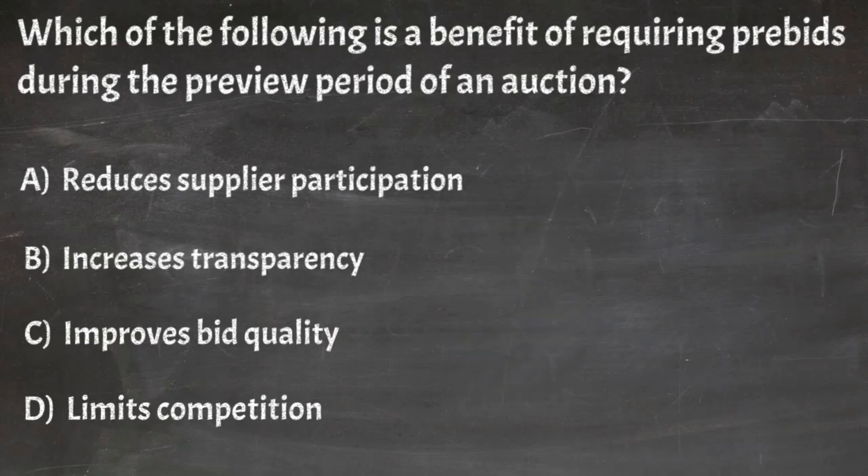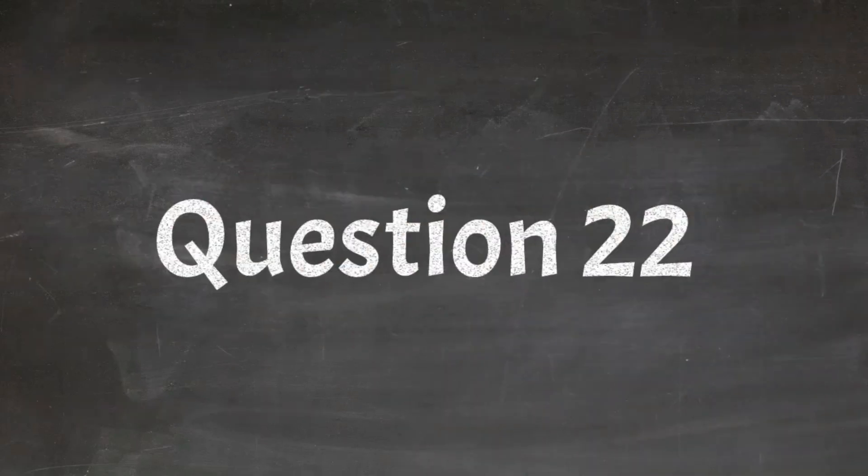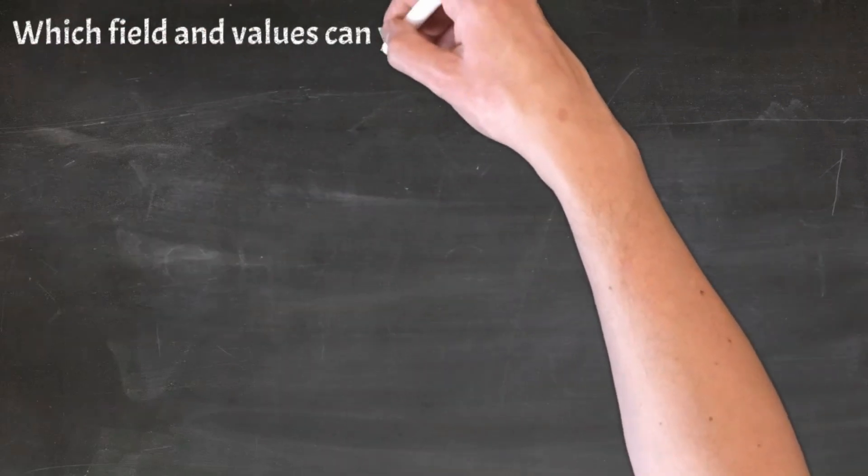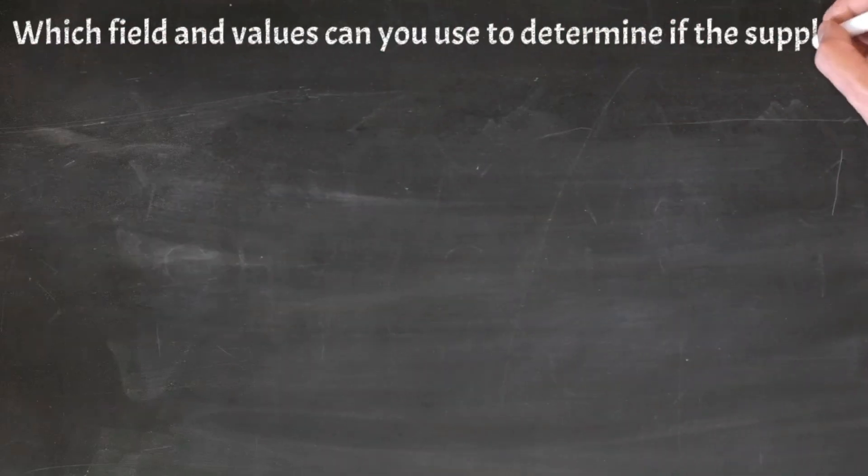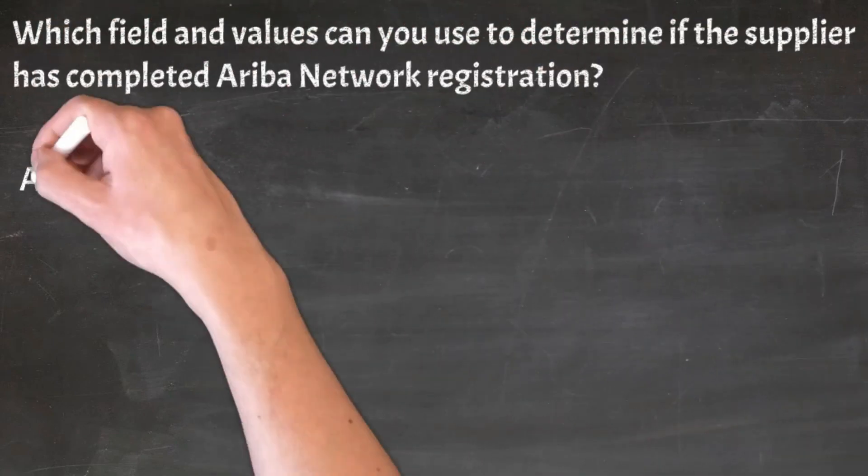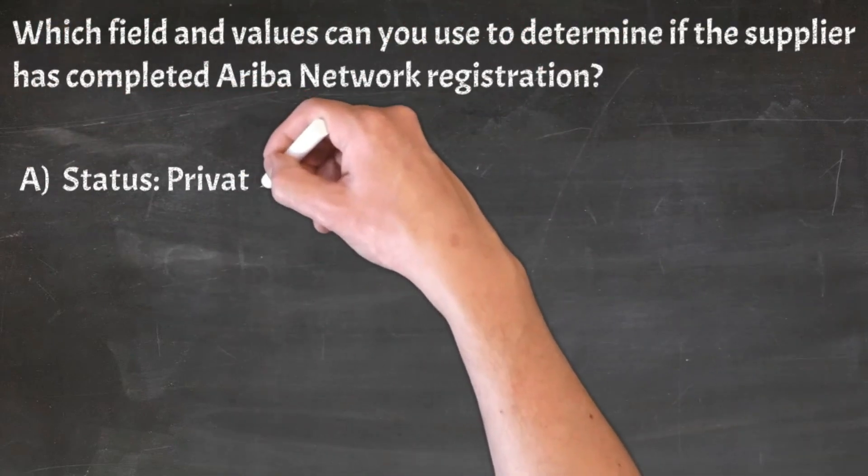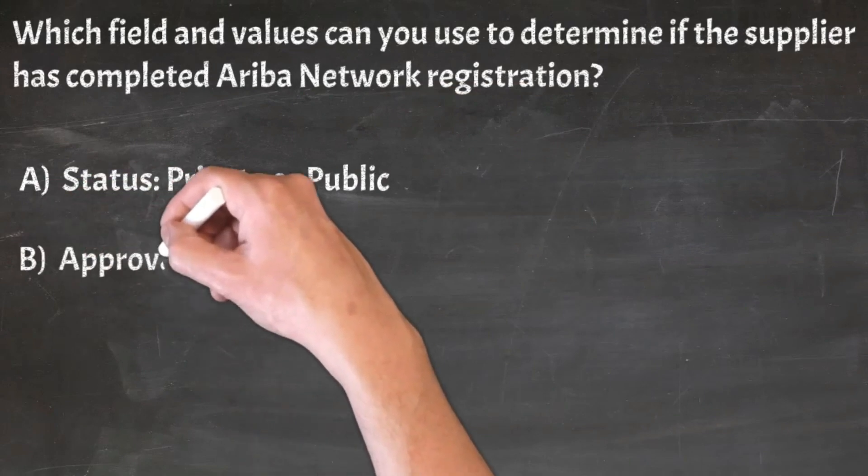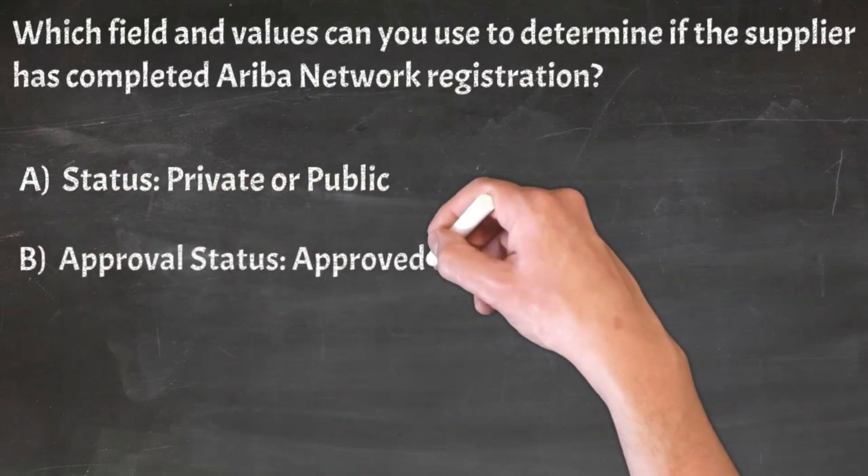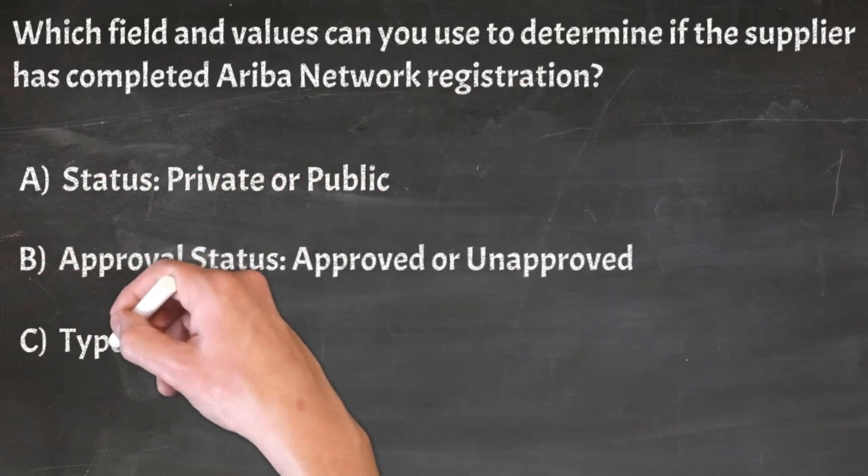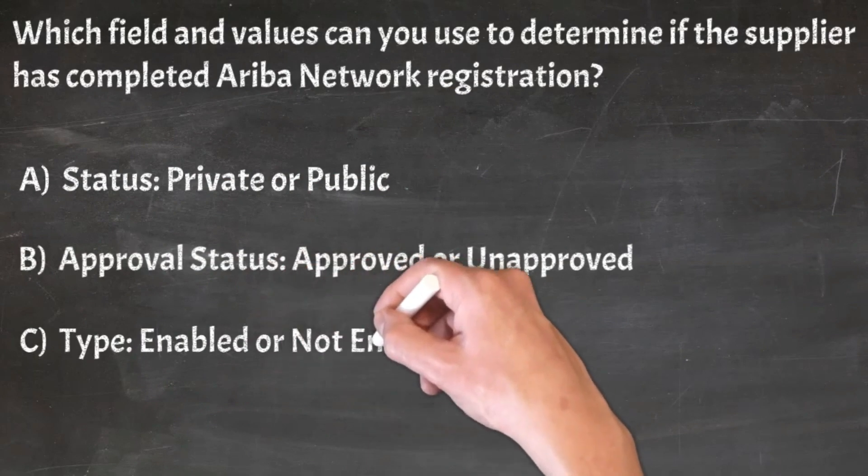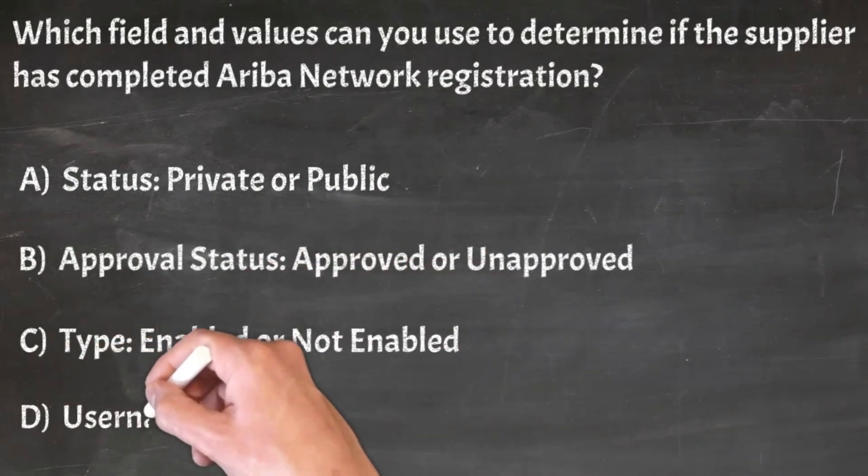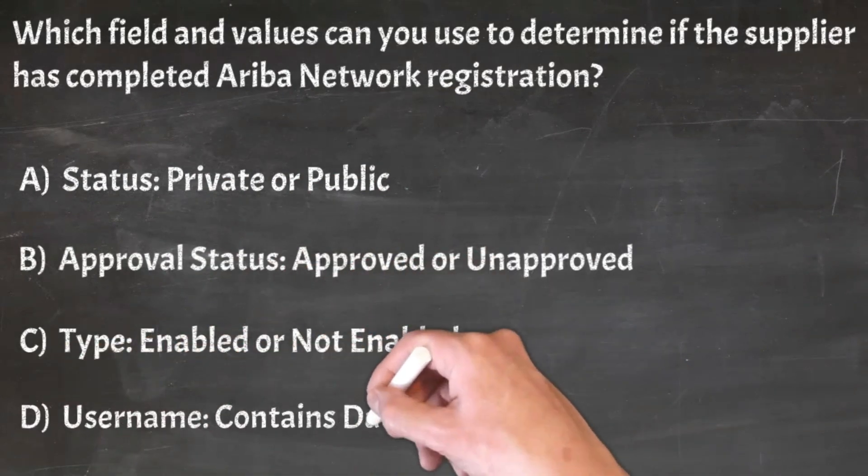Correct answer: C. Improves bid quality. Question 22: Which field and values can you use to determine if the supplier has completed Ariba network registration? A. Status private or public, B. Approval status Approved or unapproved, C. Type enabled or not enabled, D. Username Contains data or empty.